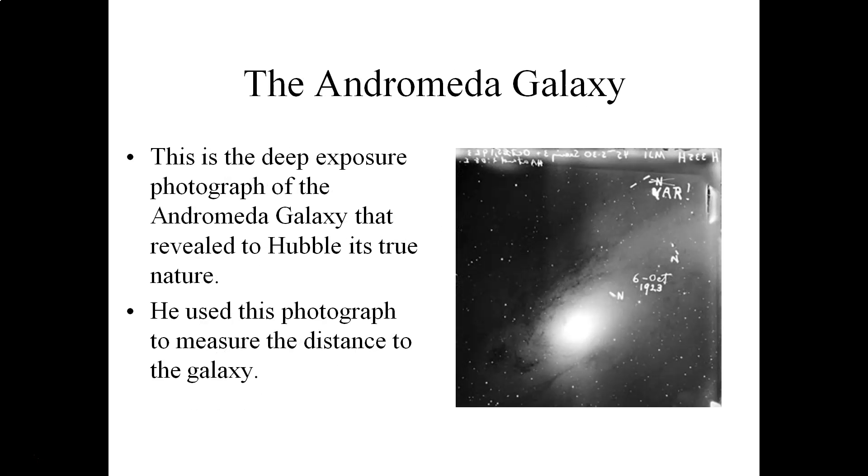Now Hubble made his discoveries with respect to galaxies by taking deep exposure photographs of what were at the time referred to as spiral nebulae. One of the great mysteries of astronomy in the early 20th century was what was the true nature of these spiral nebulae. The most prominent example at the time was known as the Andromeda Nebula.